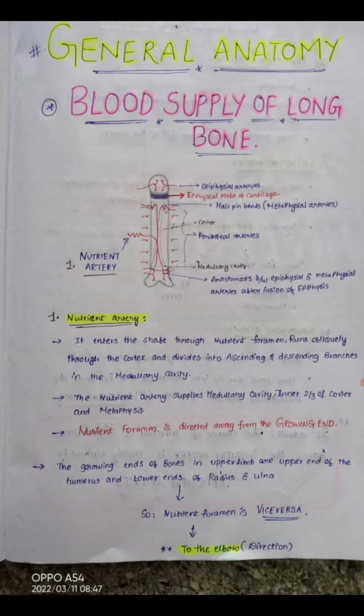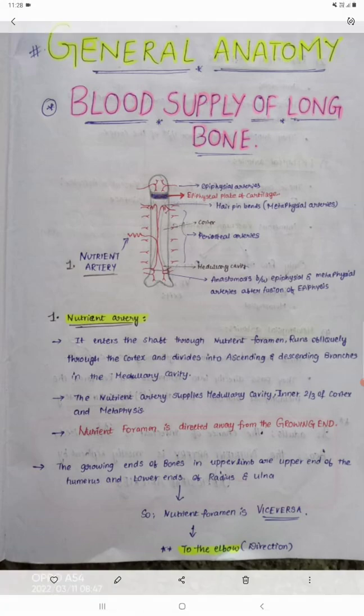The nutrient foramen is present and directed away from the growing end. As we can see in the diagram, the epiphyseal plate of cartilage is represented on the upper end of the bone — that is the growing end. So the nutrient foramen will be directed away from it, towards the lower end of the bone. In the upper and lower limb, there are different directions of the nutrient foramen.